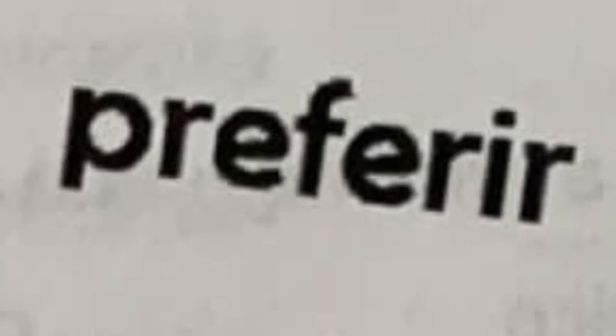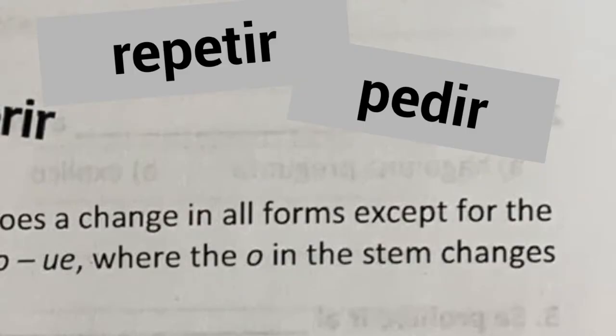And preferir — we're going to do a small underline under the second E, the one right before the R. Same thing for repetir — the second letter E, right before the T.